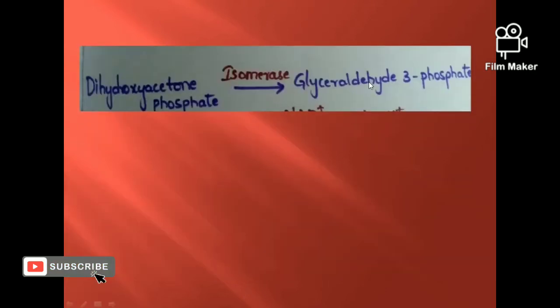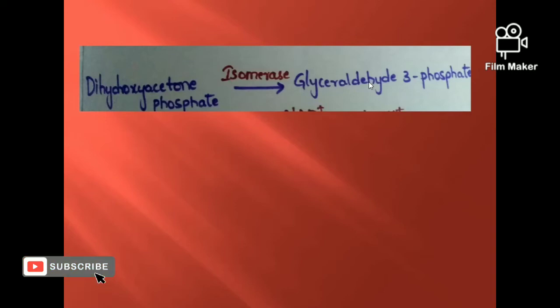In the fifth step, dihydroxyacetone phosphate gives rise to glyceraldehyde-3-phosphate in the presence of enzyme isomerase.